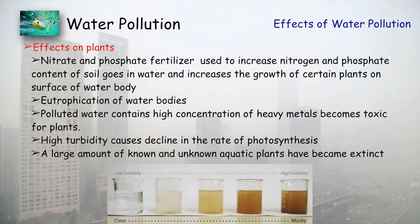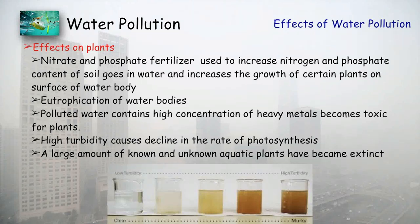Regarding effects on plants: nitrates and phosphate fertilizers increase the nitrogen content of the soil, which runs into nearby water and may increase the growth of certain plants on the surface — this is eutrophication. Polluted water with high concentrations of heavy metals becomes toxic for plants. High turbidity causes a decline in the rate of photosynthesis, and many aquatic plants have become extinct.